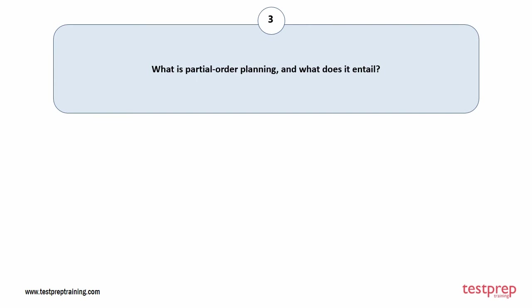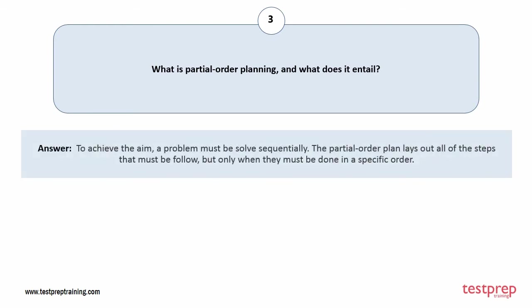Question number three: what is partial order planning and what does it entail? To achieve the aim, a problem must be solved sequentially. The partial order plan lays out all of the steps that must be followed, but only specifies order when steps must be done in a specific sequence.